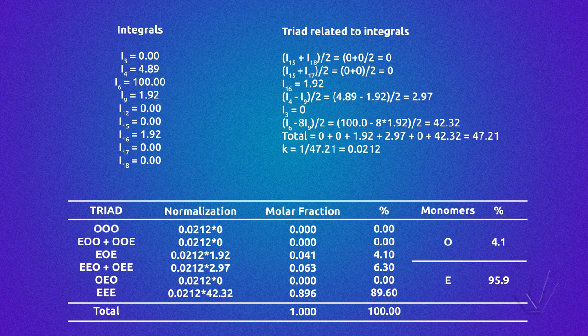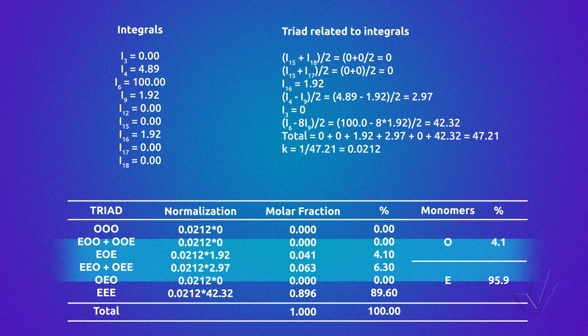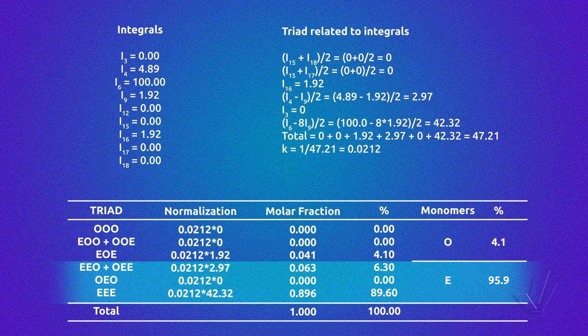If we want to know the percentage of each comonomer, we add the triads centered in O to know the amount of 1-octadecene — that is, in this case, 4.1% — and the triads centered in E to have the amount of ethylene, that is 95.9%.